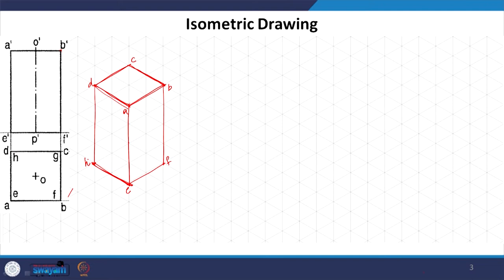Here I have not drawn the hidden lines, but we actually have to arrive at them. Again, DC is parallel to HG. I do not know where G is yet — DH is also parallel to CG. So we draw another line, and wherever they intersect is the point G, and again CB and FG are parallel. This is how we arrive at this very simple square base prism.